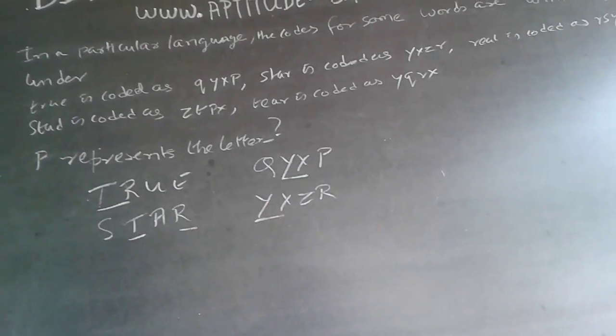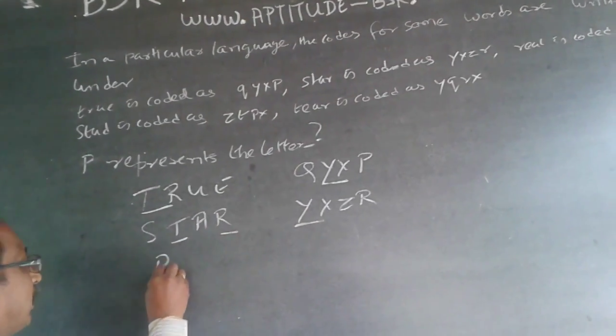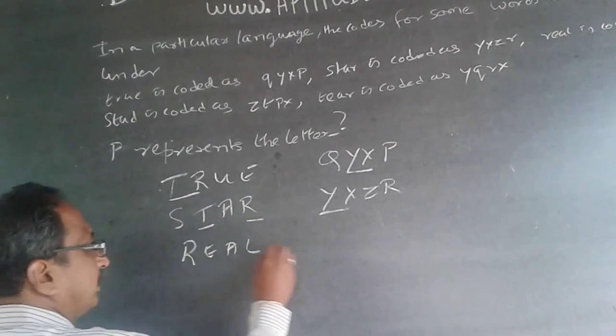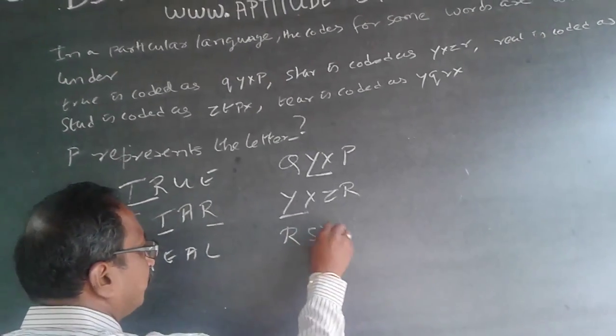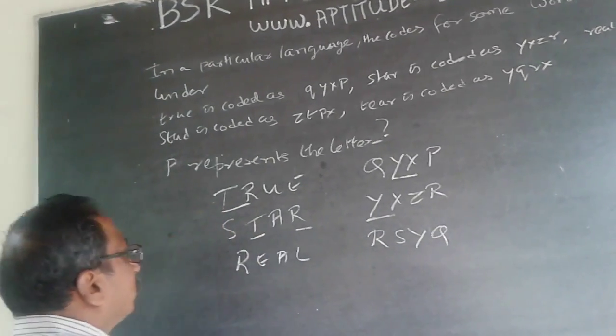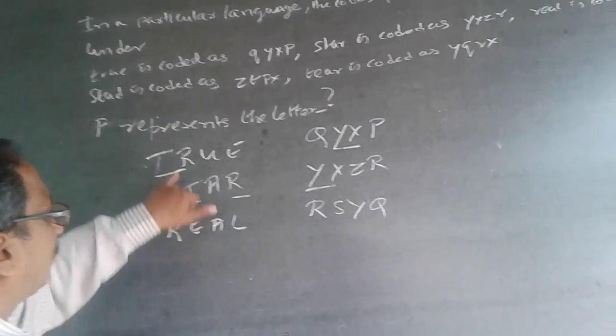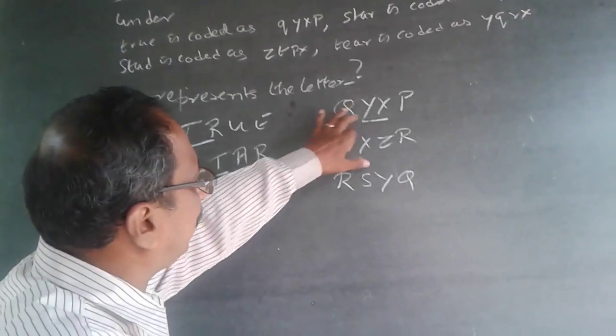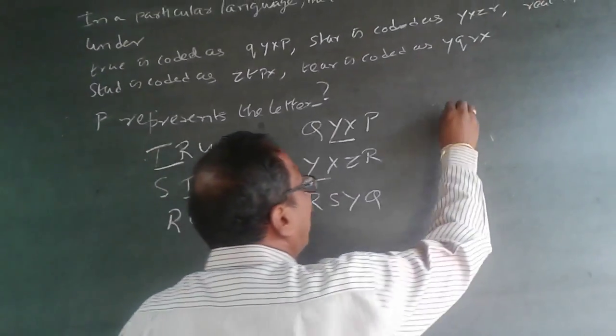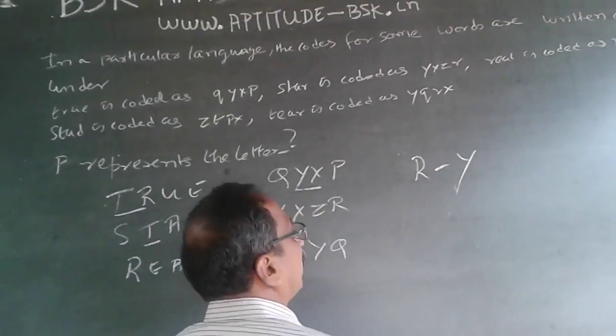Next, REAL is given as RSYQ. In all these three, R is common, so in all these three Y is common. What it implies is R will be Y.